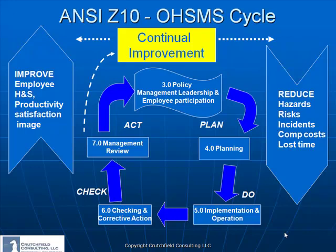The ANSI Z10 focuses on bringing into the organization a continuous improvement process by establishing under Section 3.0 a policy, Section 4.0 having a plan in place, implementing operations under Section 5, and then under Section 6 checking for corrective action. A complete process can be developed. Last but not least, under Section 7.0 there is a management review. Many of these concepts are already in place in many organizations. One component of the ANSI Z10 which must be considered is that it does ask us to focus on risk in order to reduce hazards.